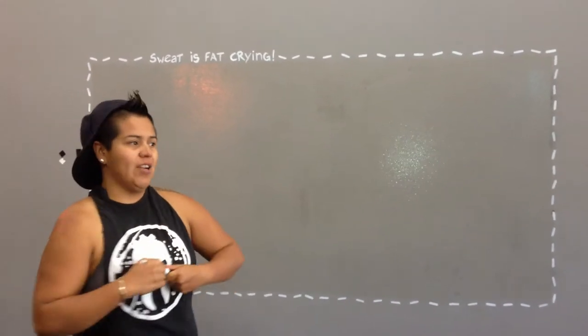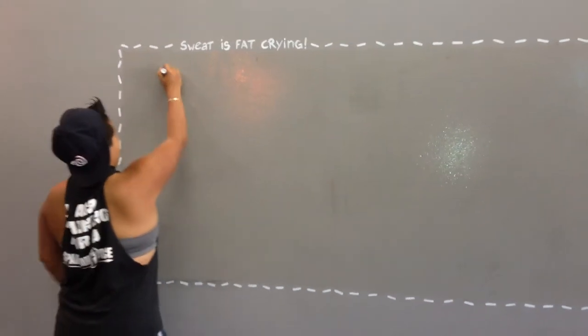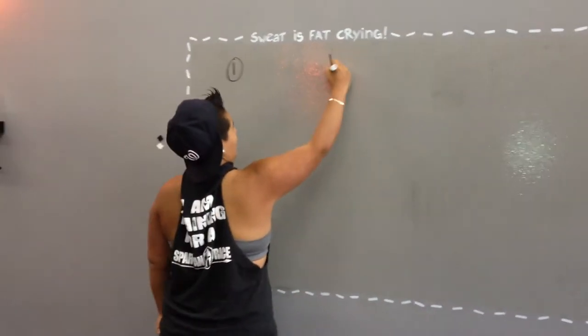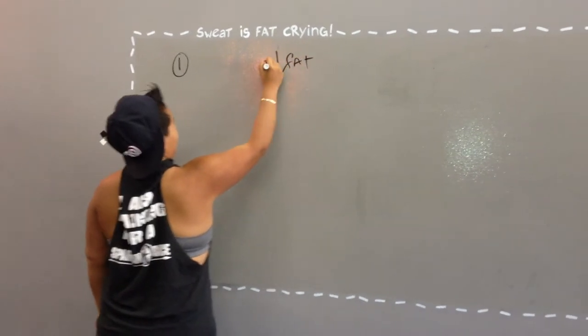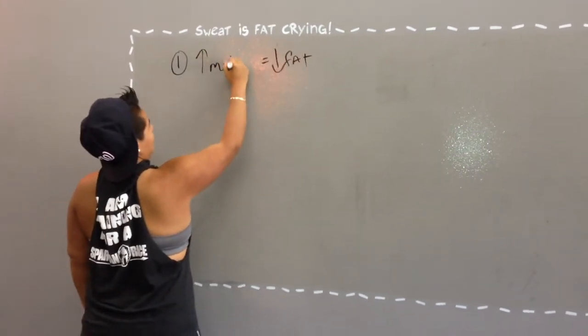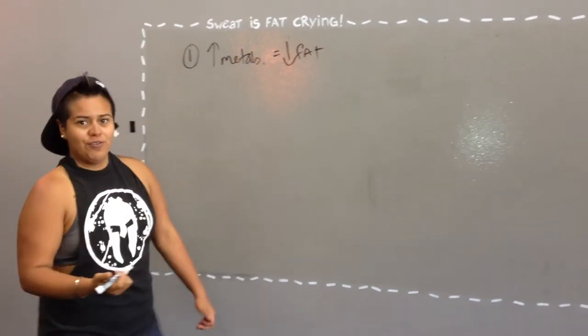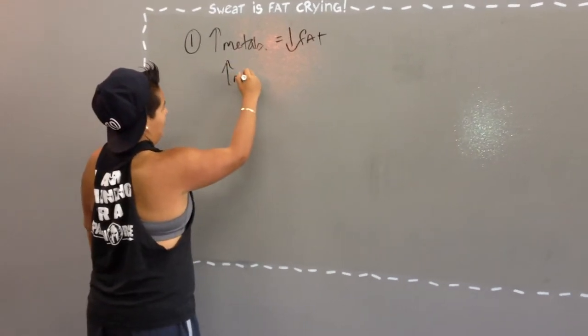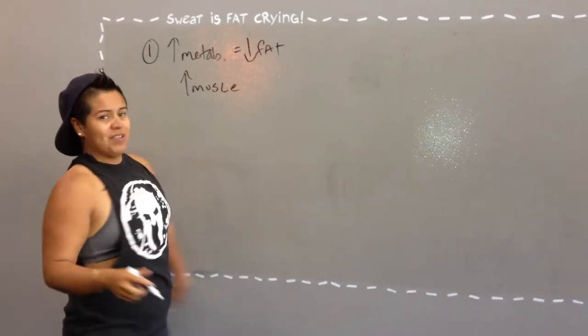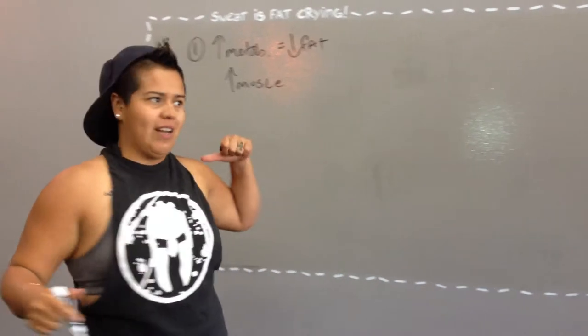Okay, so I just want to recap before I get going. First lesson was basically, if you want to drop body fat, you have to increase your metabolism. In order for you to increase your metabolism, you have to get more muscle. That was in the last video. If you didn't check it out, go back and check it out so you know where we're at.